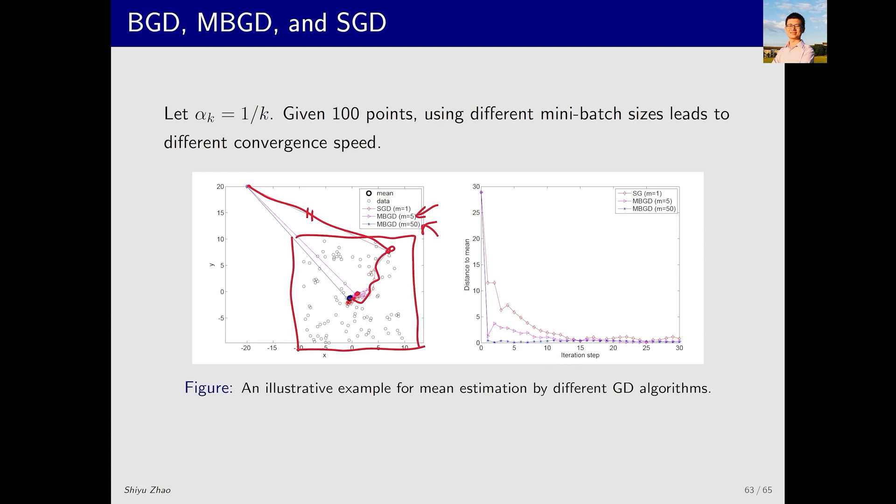The right figure provides a similar illustration. The x-axis represents the iteration step and the y-axis represents the distance to the mean. You can see that with a batch size of 50, mini-batch gradient descent quickly reaches a distance very close to the target. In comparison, SGD is slower, but it still converges relatively quickly.